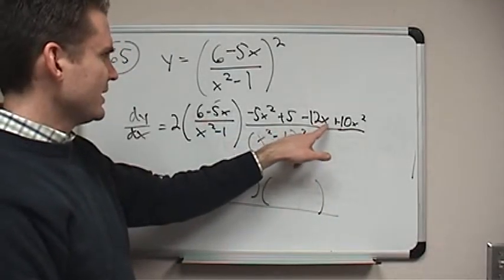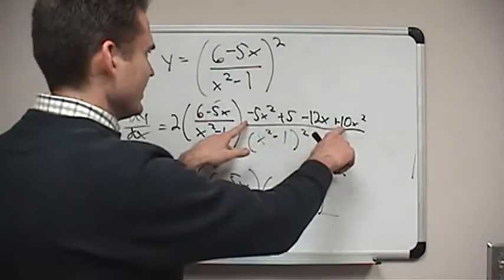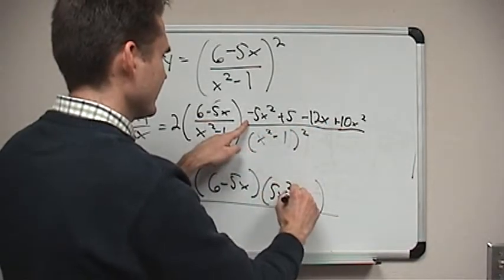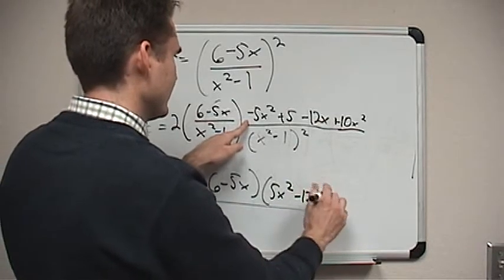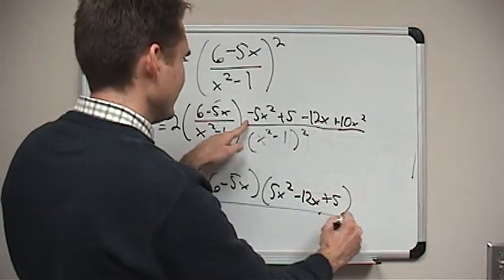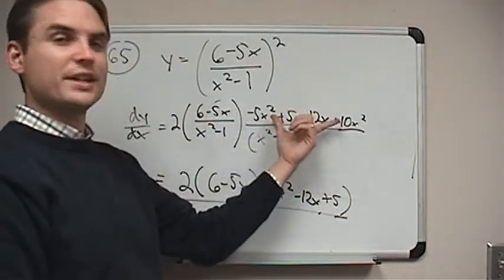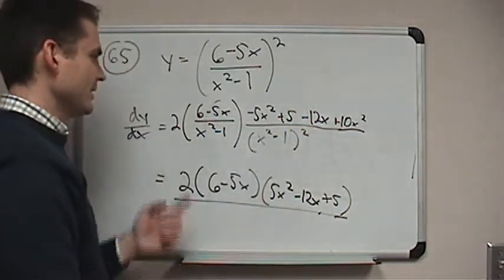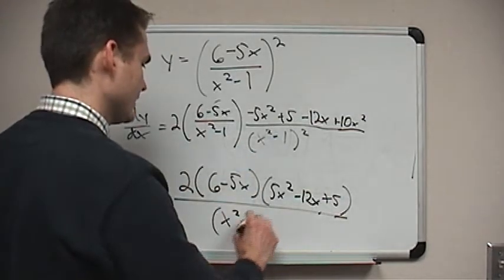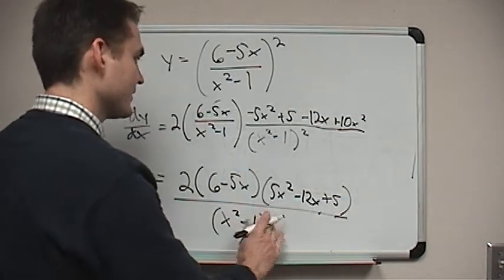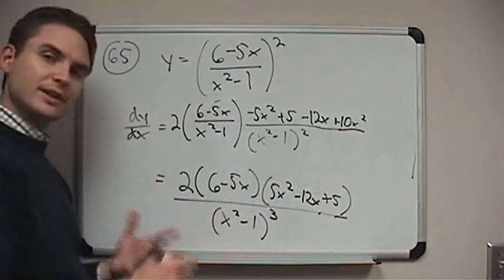Now, the numerator is going to be, well, what's this last term? It's going to be 5x squared minus 12x plus 5. Okay, so that's just as much as I can do to simplify this. Now, the denominators are x squared minus 1 and x squared minus 1 squared. So, all together, that's going to be x squared minus 1 cubed. I've got one x squared minus 1 and two more here, so I'll get x squared minus 1 cubed.